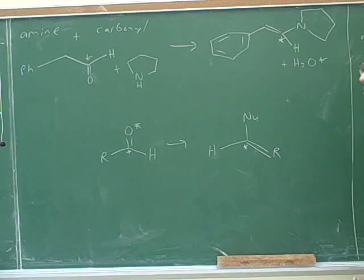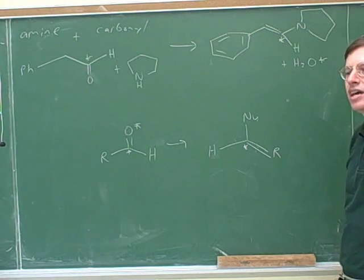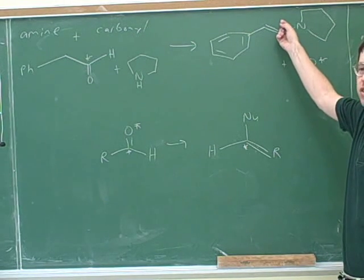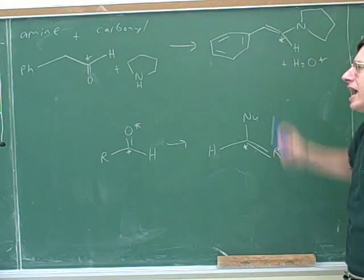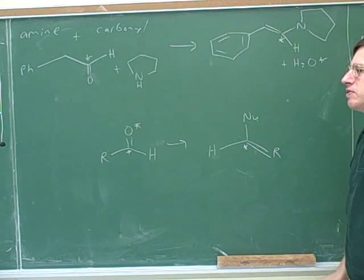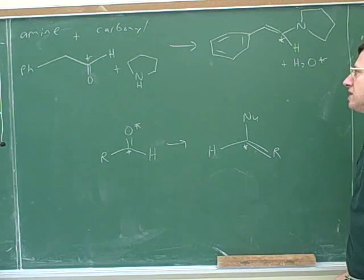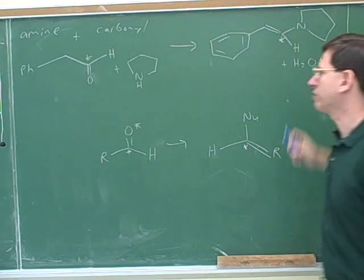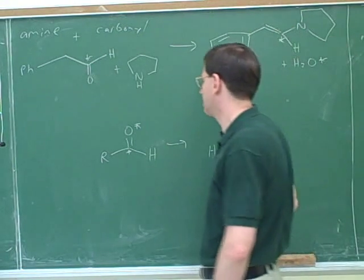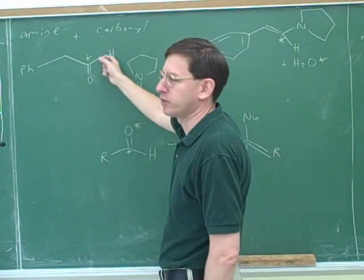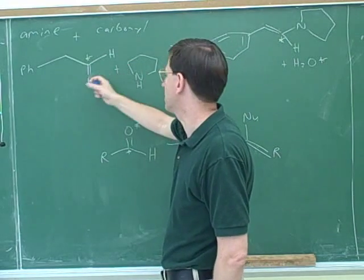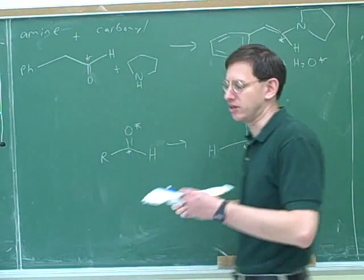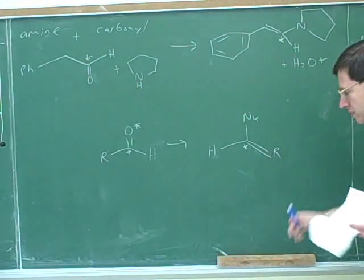How would you have known to even think about this on the test? You've got to watch out for enamines. When you see an enamine as a product, you should think: that was probably produced by a category 4 attack of a secondary amine on an aldehyde or ketone, which is what we did here.